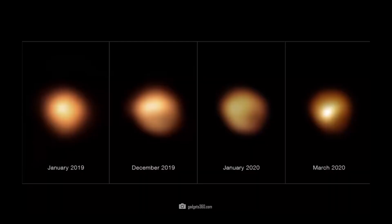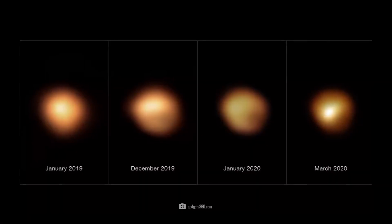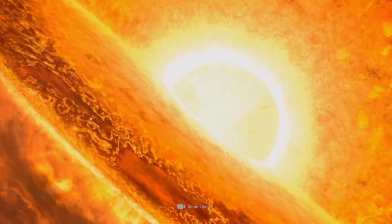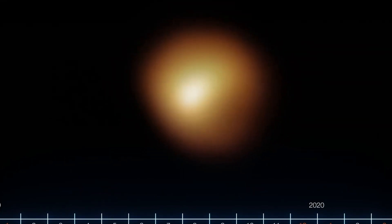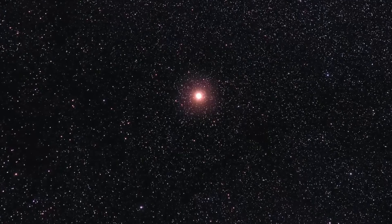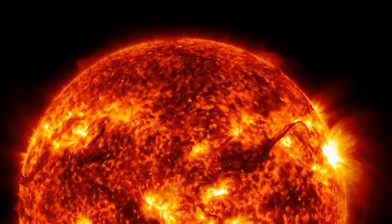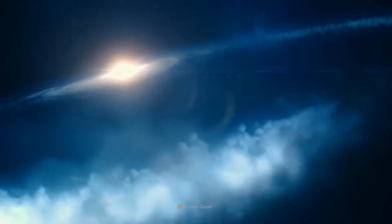After an event that became known as the Great Dimming, Betelgeuse again showed abnormalities in 2023 that could not initially be explained by the normal processes on this star. Does this now mean that Betelgeuse will soon explode after all, and we on Earth will witness a magnificent supernova?